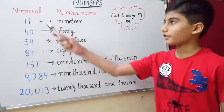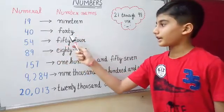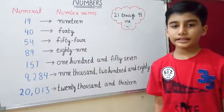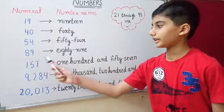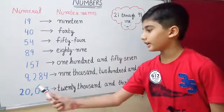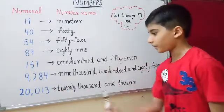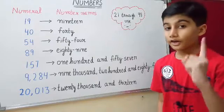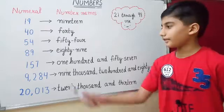Now let us see some examples of numerals and number names. Nineteen — nineteen. Forty — F-O-R-T-Y. Friends, do not write F-O-U-R-T-Y; instead write forty. Fifty-four — fifty four. Eighty-nine — eighty nine. One hundred fifty-seven — one hundred and fifty seven. Nine thousand two hundred and eighty-four — nine thousand two hundred and eighty four. Twenty thousand and thirteen — twenty thousand and thirteen. Always remember: numbers 21 through 99 get a hyphen when written in word form.